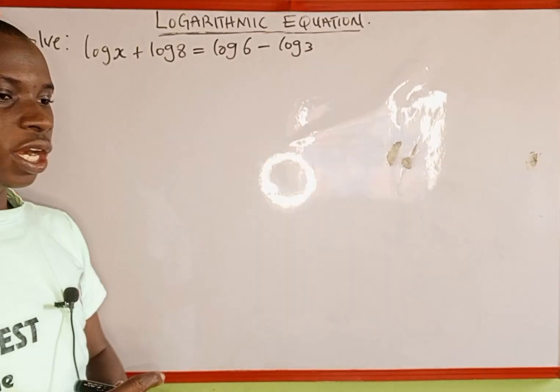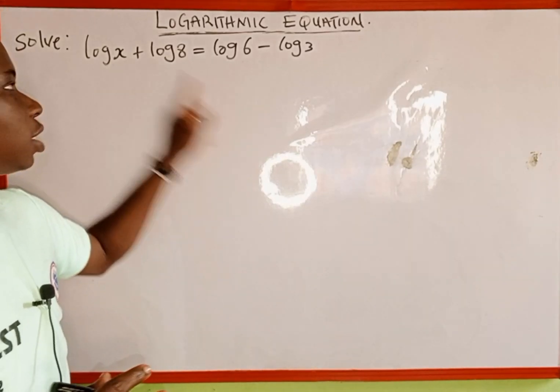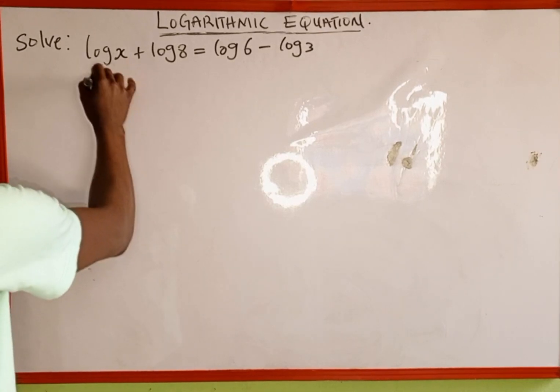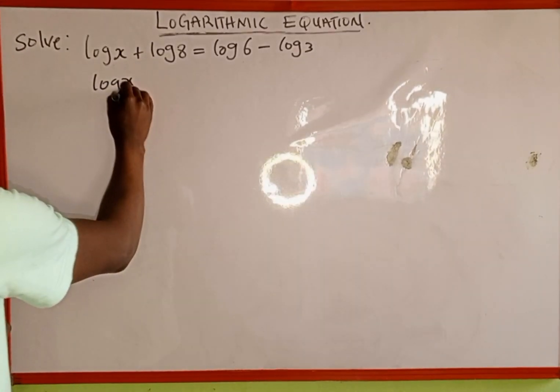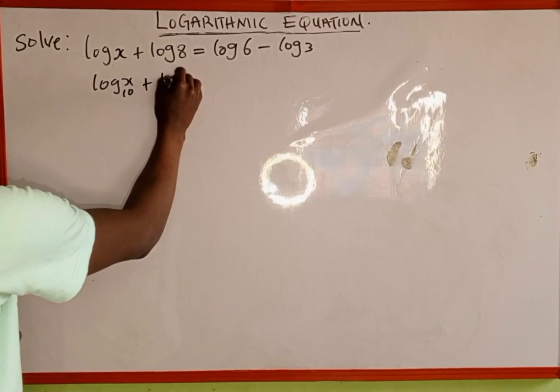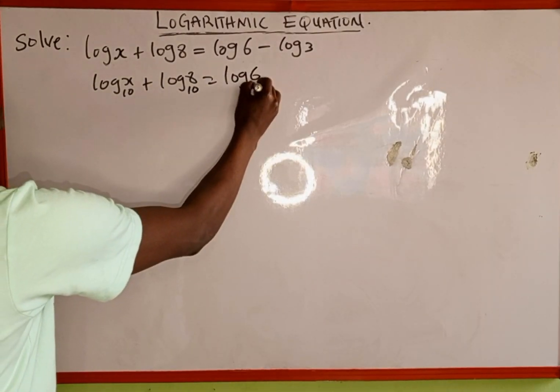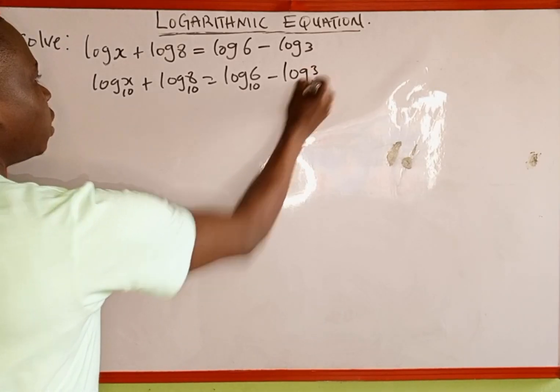Whenever you are given a logarithm without a base, it means the logarithm is to the base of 10. So we are going to include base 10. This is the same as log of x to base 10 plus log of 8 to base 10, which is equal to log of 6 to base 10 minus log of 3 to base 10.